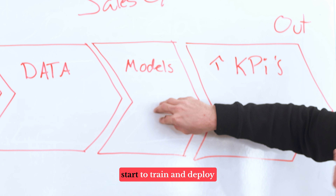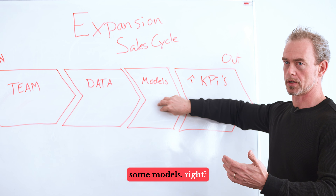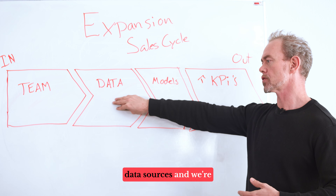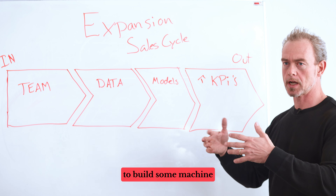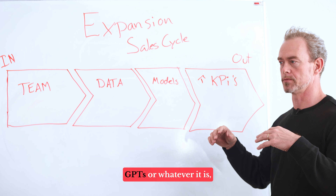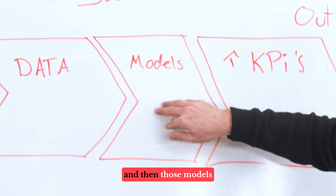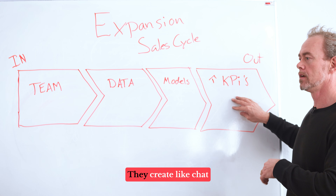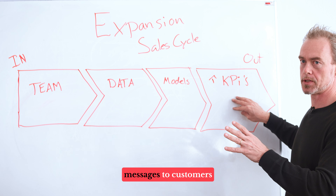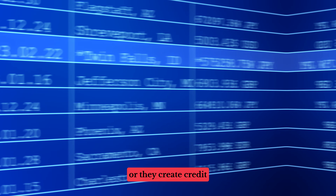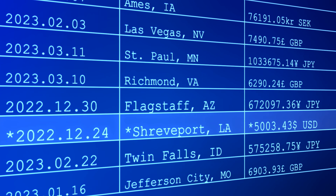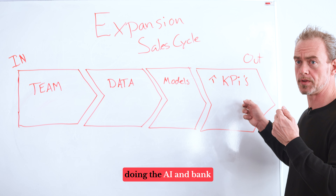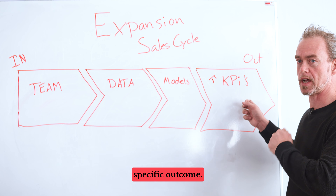Then they start to train and deploy some models. They now have some data sources, and they build machine learning models, GPTs, or whatever it is. Those models then do something — they create chat messages to customers, credit scores, or handle processes — some sort of specific outcome.